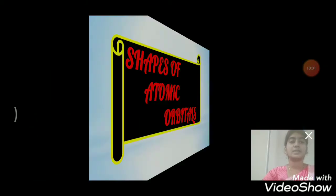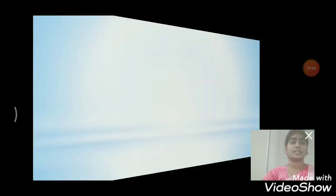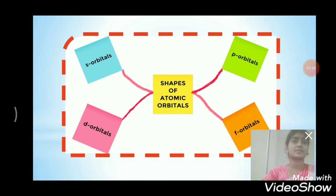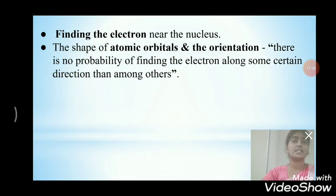There are four orbitals present: s orbital, p orbital, d orbital, and f orbital. An orbital of small size states that there is more chance of finding the electron near the nucleus. The shape and orientation of atomic orbitals indicate that there is no equal probability of finding the electron along all directions.